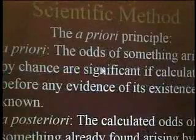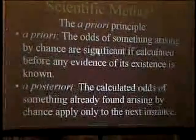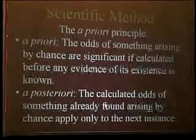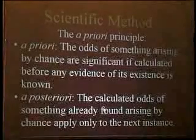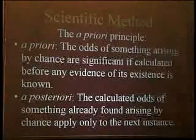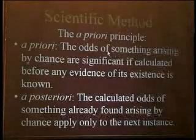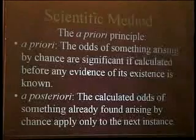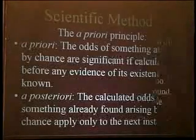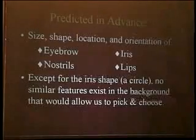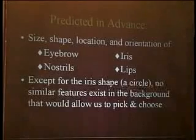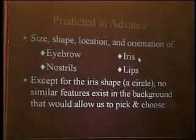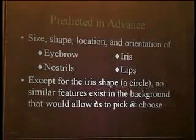When all is said and done, this a priori principle allows us to calculate the odds of the face being found by chance — which only apply to the next instance, not to the one already found. That can be a face-in-clouds effect, however improbable. But the predictions made in advance refer to the next instance. In that case, we have the prediction of secondary facial features — their size, shape, location, and orientation — each with its own probability, individually ranging from 1 in 10 to 1 in 10,000. All the features showed up with the right size, shape, location, and orientation, giving us very large combined odds against chance.